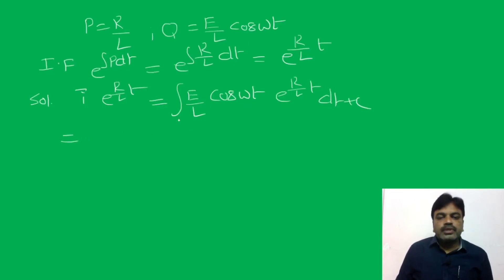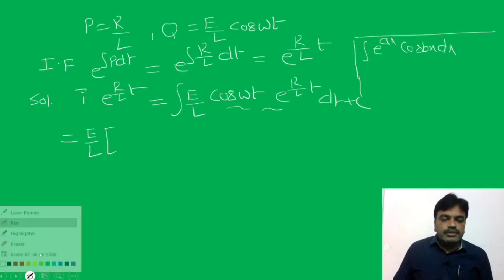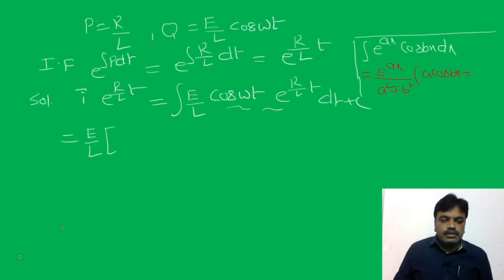Since E/L is a constant, write it outside the bracket. Now if we observe, we have the formula: ∫e^(ax) cos(bx) dx = e^(ax) / (a² + b²) × (a cos(bx) + b sin(bx)). This is the formula.